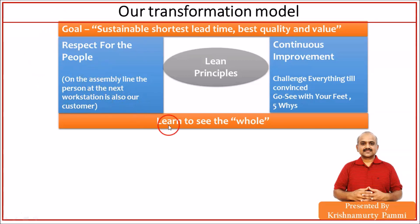The left pillar is respect for the people. In that program, we defined 'customer' as any person immediately upstream to us on the assembly line — whether a test engineer or test developer. The person consuming our services in the flow line is our customer. Respect for people means genuinely valuing their observations and signals. If someone consuming our services signals a problem, we want to understand it. The right pillar is continuous improvement — challenging everything until we get convinced.